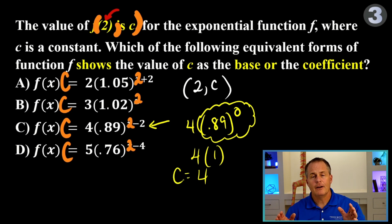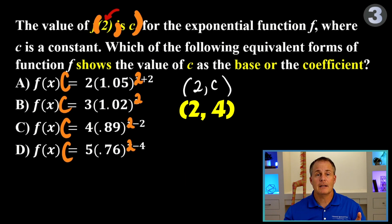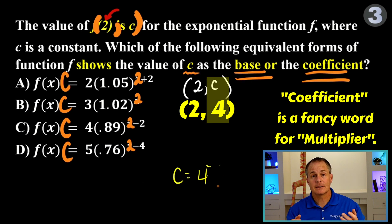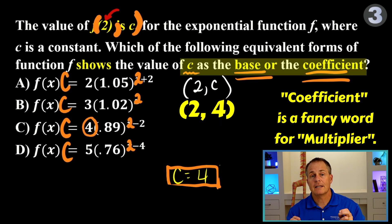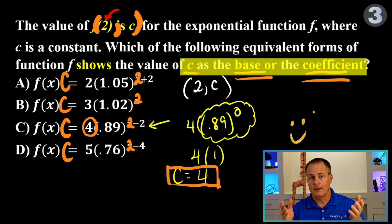Now that we've done that, do you even understand what the question is even asking? We put in 2, and we got out 4. So, the ordered pair is (2, 4), and originally the ordered pair was (2, c). So, it looks like c must be 4. When you look at the equation and answer choice C, notice how the 4 shows in the function as a coefficient. That's what makes C the right answer.